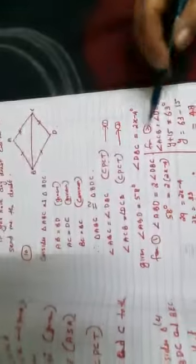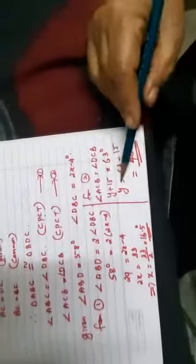from 2, ACB is equal to DCB. Y plus 15 is equal to 63. Y is equal to 63 minus 15, that is 48.